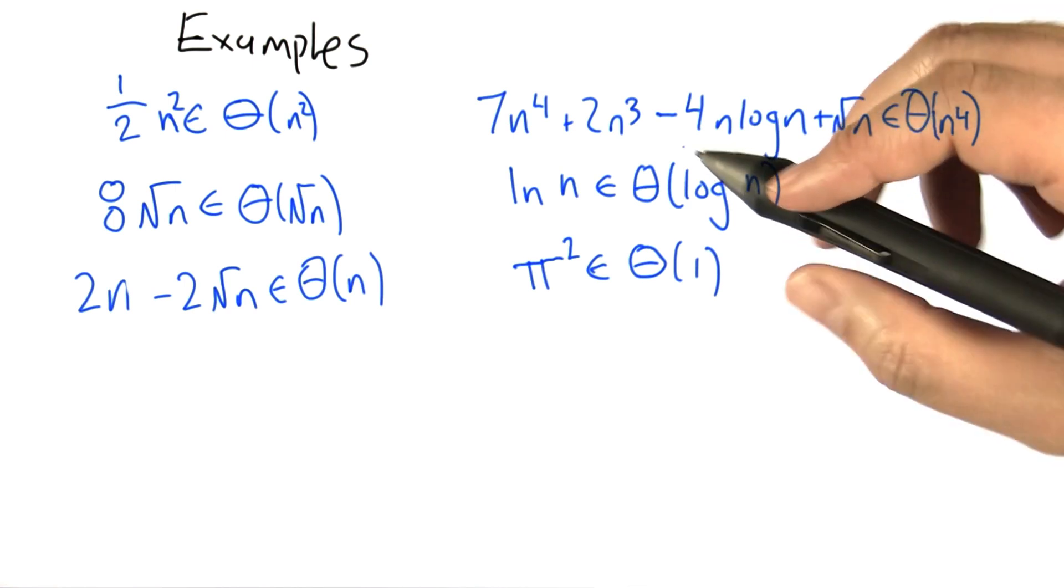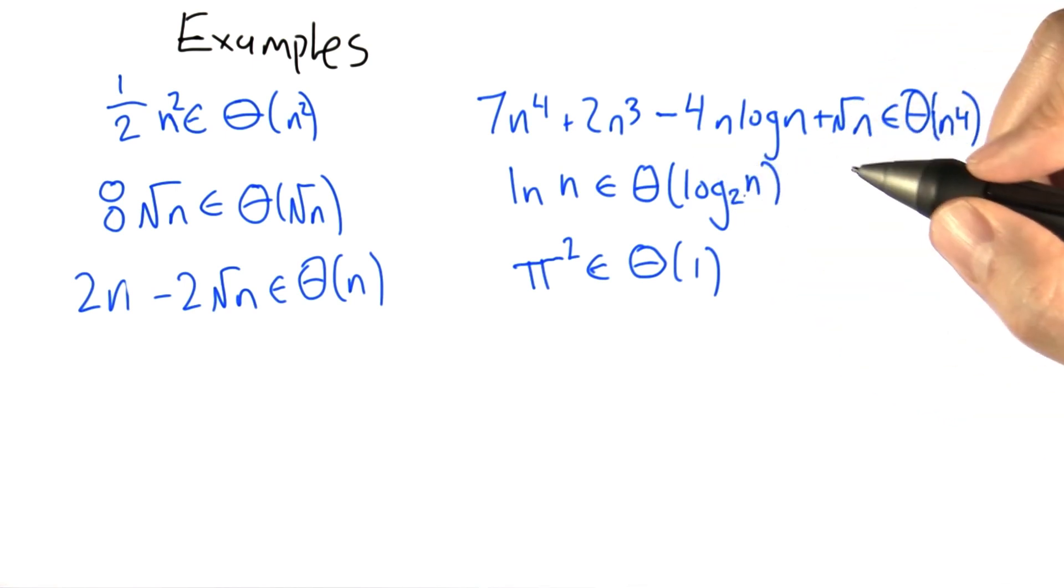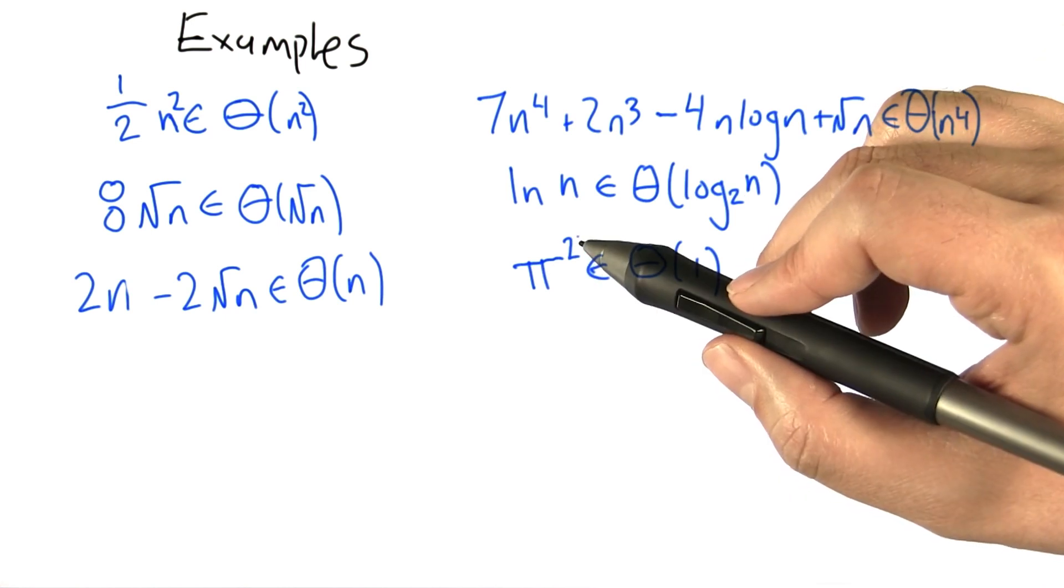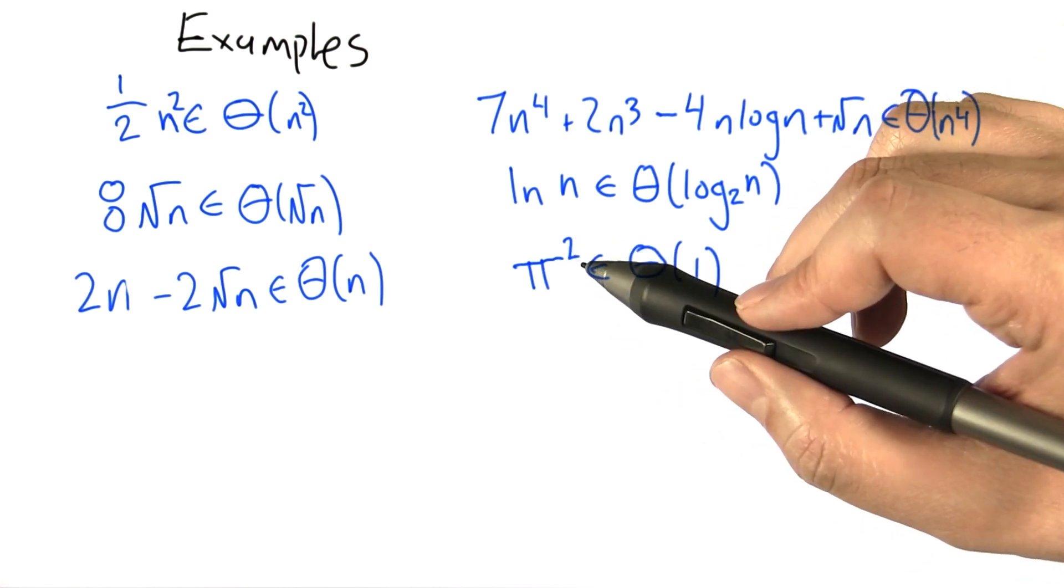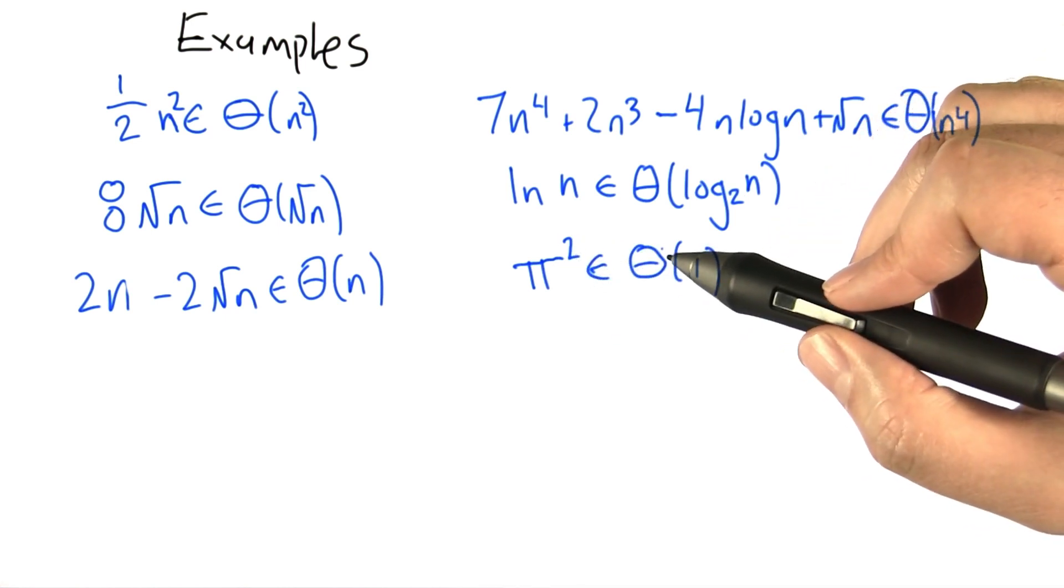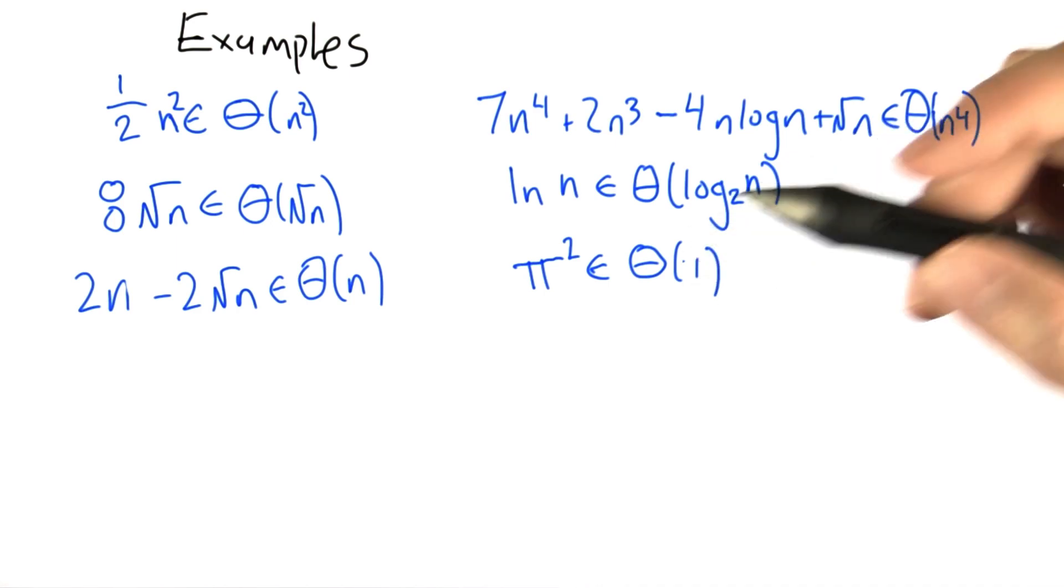I like to think in terms of base 2 logs because I'm a computer scientist. That's what we do. π² is something that doesn't grow with n and it ends up being in the set Big Theta of 1. It's just another constant.